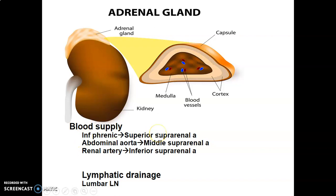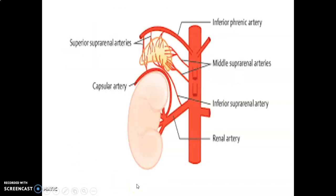The blood supply of the adrenal gland is mainly by suprarenal arteries. There's a superior suprarenal artery from the inferior phrenic artery, which is from the abdominal aorta. The middle suprarenal artery is directly from the abdominal aorta, and the inferior suprarenal artery comes from the renal artery, which is also from the abdominal aorta. The adrenal gland is drained by the lumbar lymph nodes.